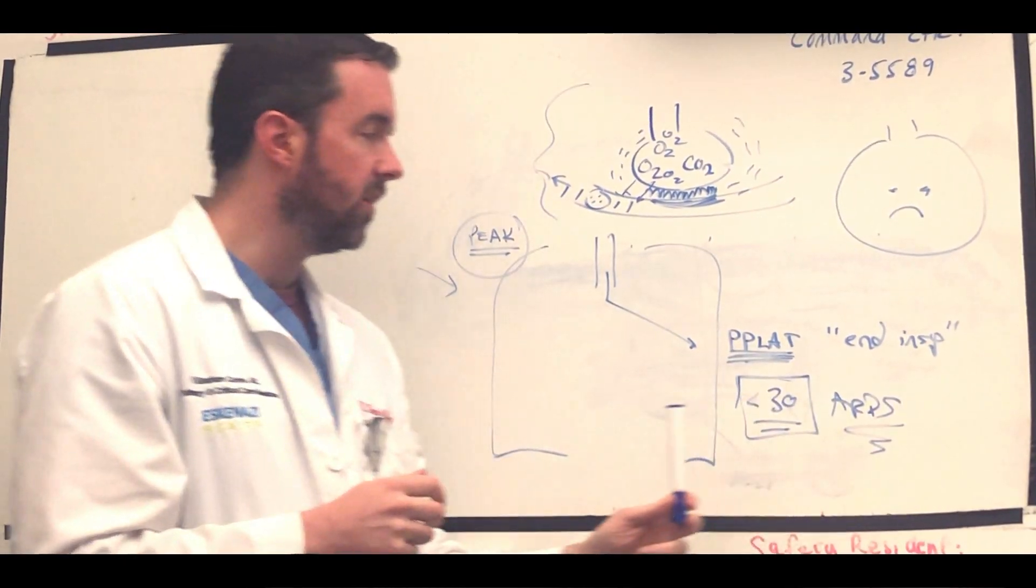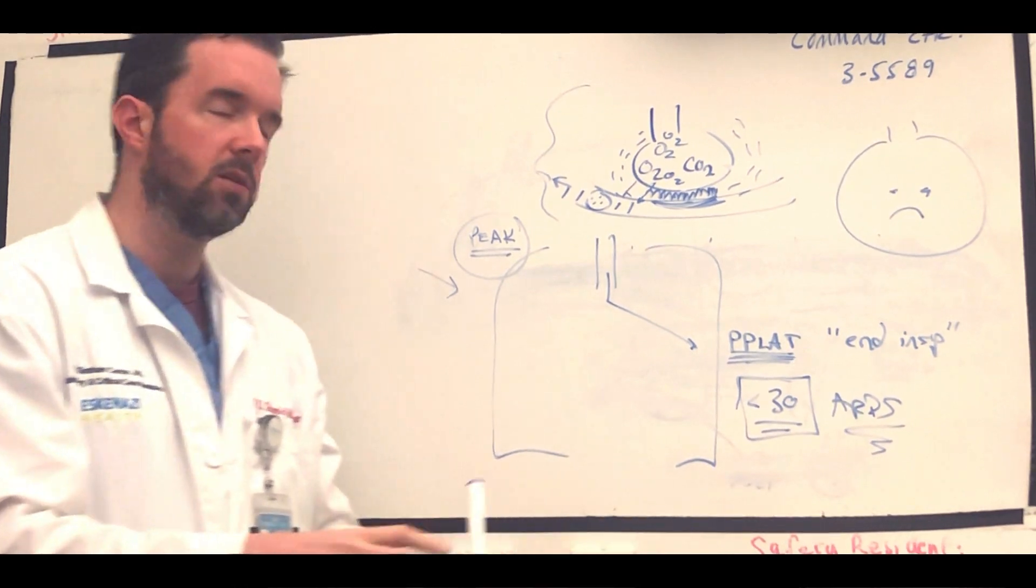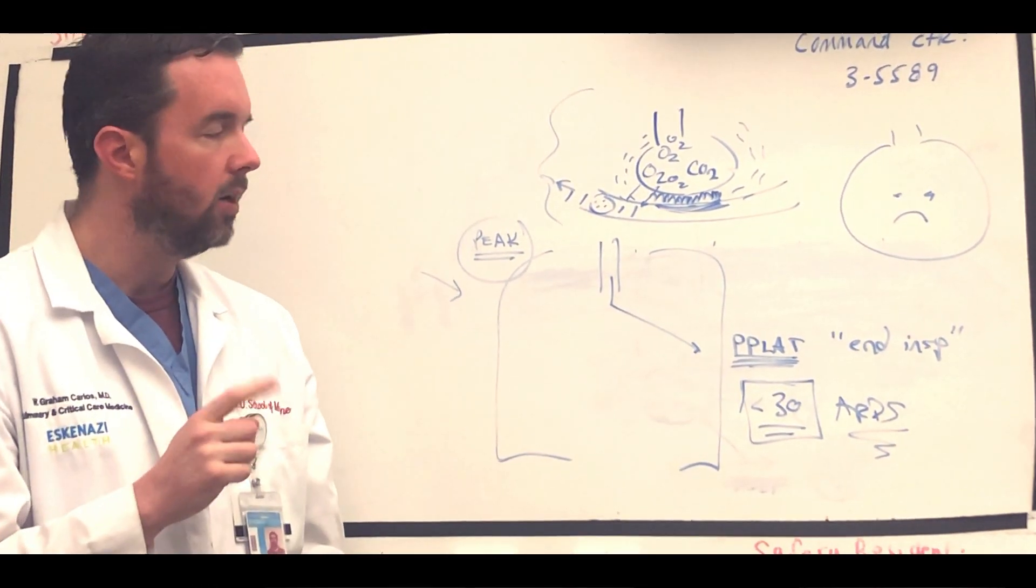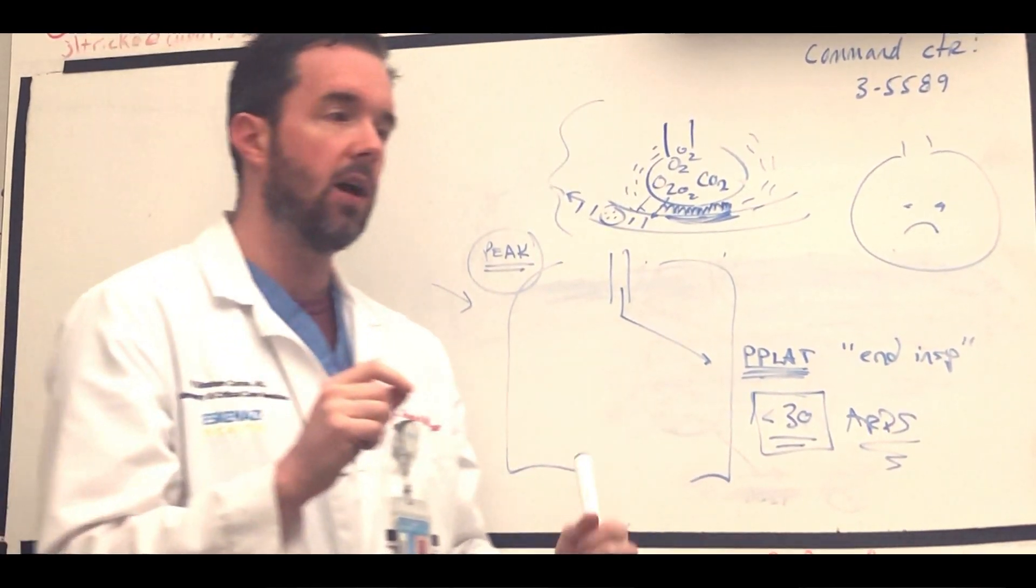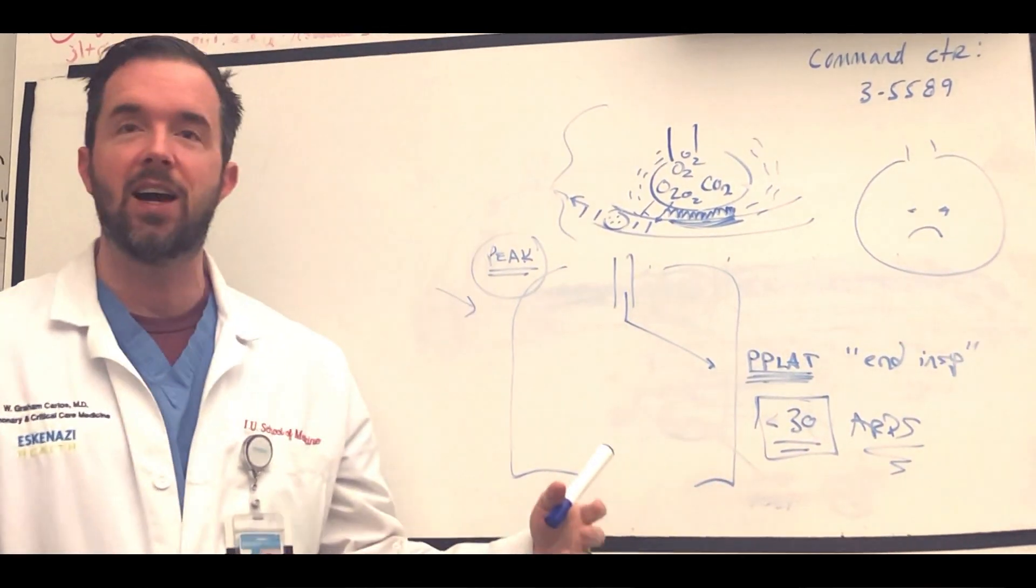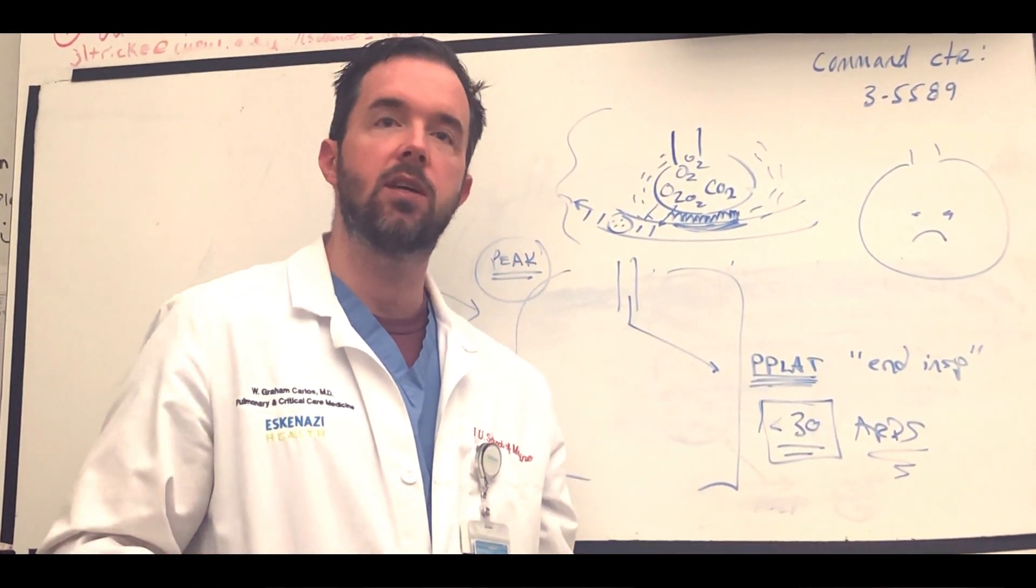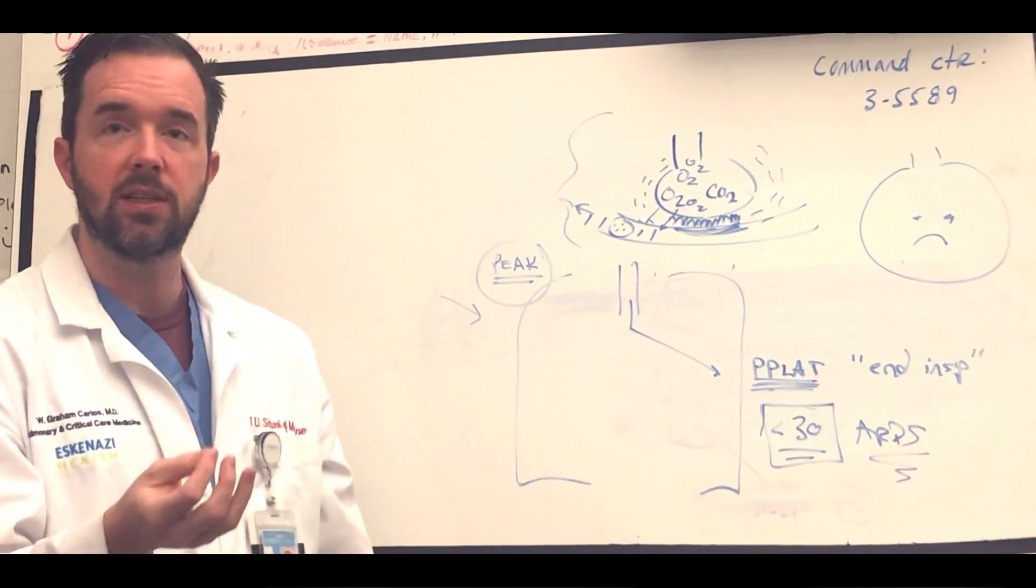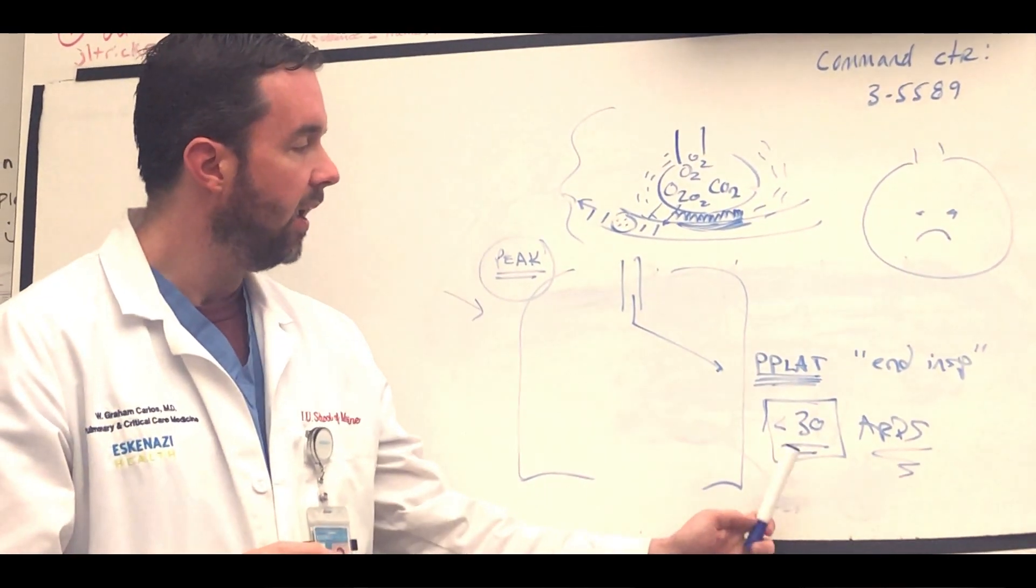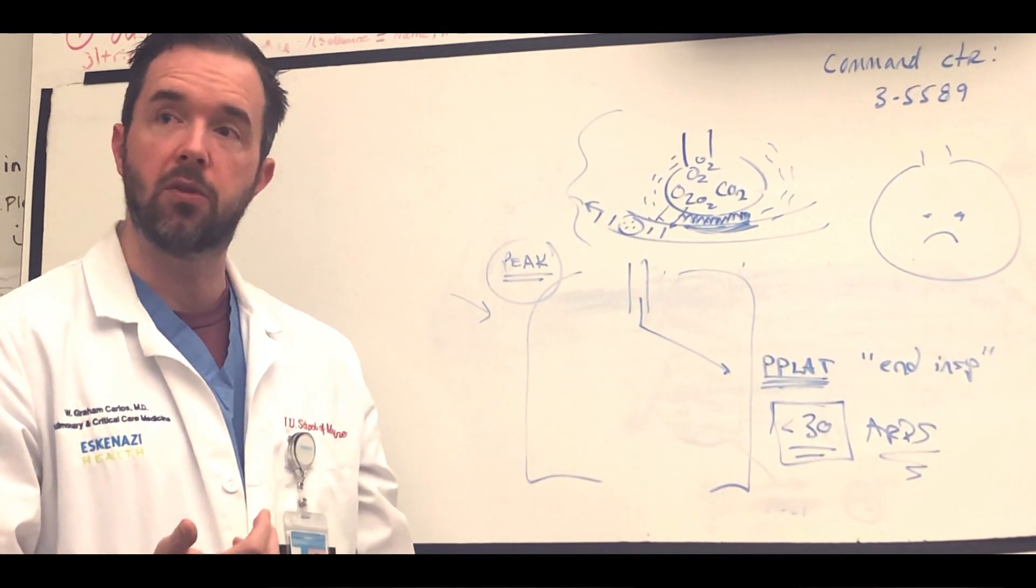In ARDS specifically, we keep tidal volumes low, six mils per kilo predicted body weight. Remember that in ARDS, your lungs don't increase in size as your body habitus increases. Your lung size is based on your height. That's why it's predicted body weight in that calculation. And we try to keep the plateaus under 30.